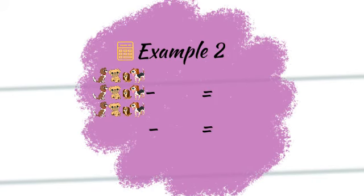1, 2, 3, 4, 5, 6, 7, 8, 9, 10, 11, 12. So we start with 12 puppies.